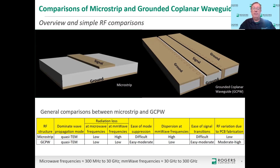The Grounded Coplanar Waveguide, if designed correctly, can have very little issues with radiation loss — maybe even eliminate it completely. The column for ease of mode suppression refers to suppressing the unwanted modes: the hybrid TE and hybrid TM modes, and possibly surface wave modes. Trying to suppress those modes at higher frequencies is really difficult for MicroStrip. Grounded Coplanar Waveguide, just by the nature of the structure, gives you more flexibility in the design to be able to suppress these modes.